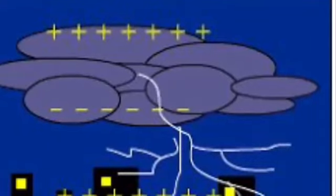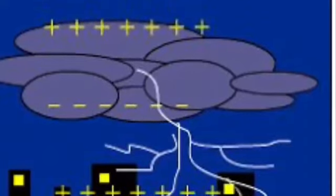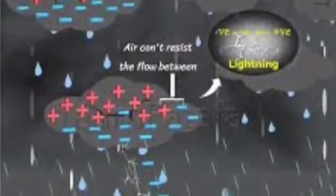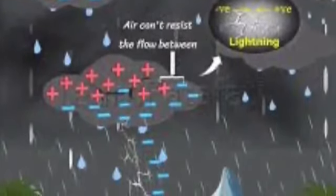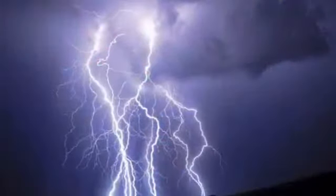The positive charges also collect near the ground. Air is a poor conductor of electricity, yet when the magnitude of the collective charge becomes very large, air is no longer able to stop it. Hence, the negative charge meets the positive charge, producing a bright light streak and a loud sound — which we call lightning.